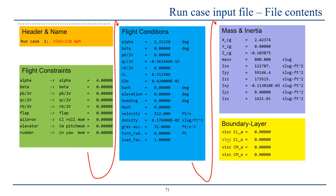Lastly, you have boundary layer information — parameters that start with 'visc' for viscous — which are useful for considering boundary layer properties and analysis. When set to zero, they will either default to what the program is set up to or be ignored. These blocks of information are all included in a run file, stacked below one another.